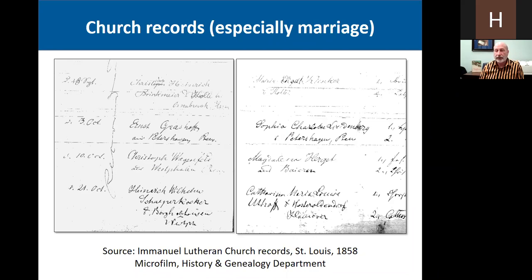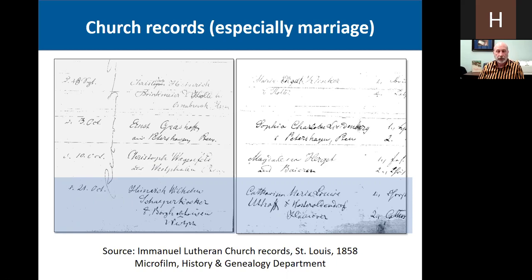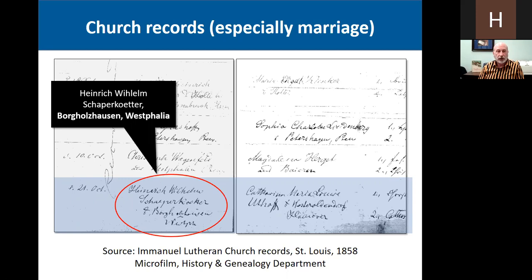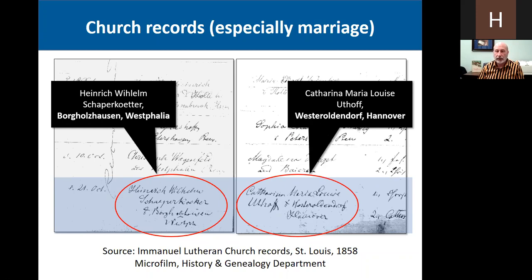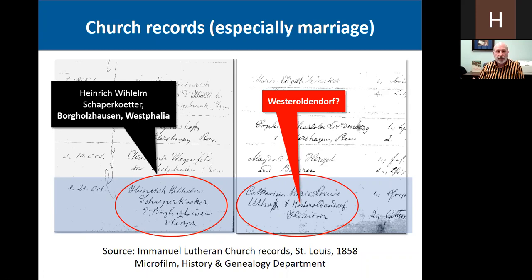Church records — German Protestant church records in particular are really great, especially the earlier ones for mentioning the place of origin of the person. We're going to look at this entry in the church records from Emmanuel Lutheran Church in St. Louis in 1858. This is for Heinrich Wilhelm Scheperkotter, who is from Borgholzhausen in Westphalia, and he is marrying Katarina Maria Uthoff from Wester Oldendorf, Hanover. I can find Borgholzhausen on the map — a lot of people who immigrated to the St. Louis area came from Borgholzhausen. But when I try to find the village of Wester Oldendorf in all the sources I have, all the maps and gazetteers, there is no such village.